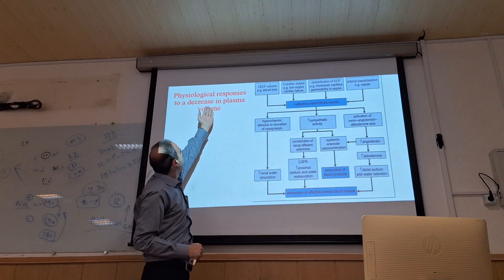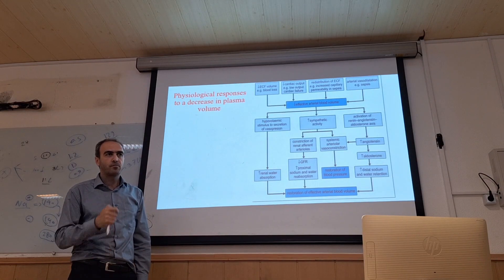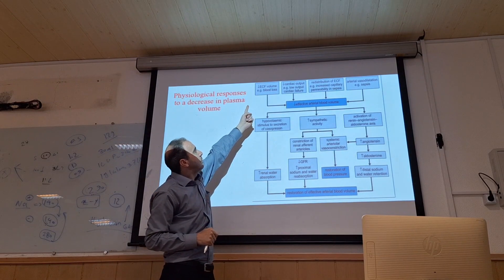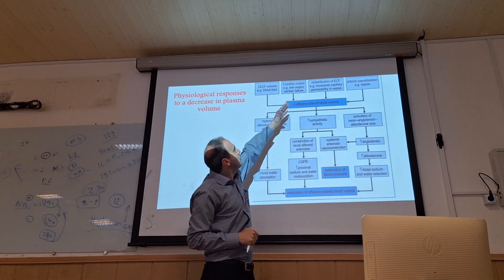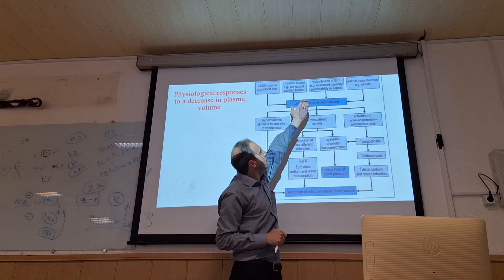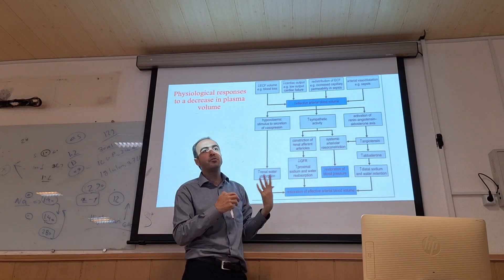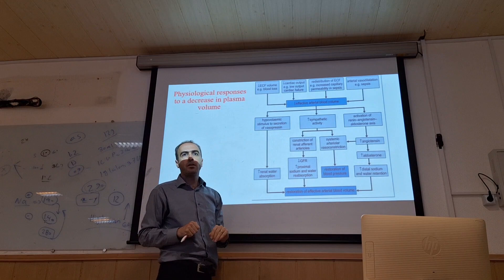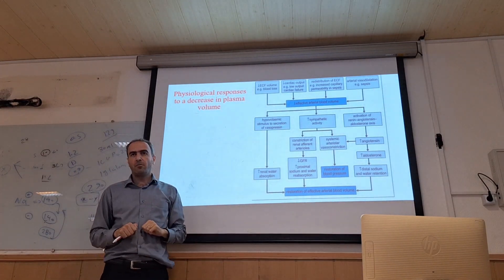Otherwise, when we have a decrease in plasma volume — a decrease in ECF volume — it can be due to blood losing, decreased cardiac output due to cardiac failure, maldistribution of ECF, for example increased capillary permeability due to sepsis, or arterial vasodilation again due to sepsis. All of these result in decreasing plasma volume.